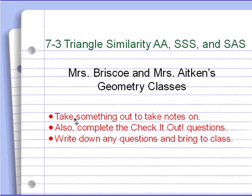We're covering 7-3 today, which is triangle similarity: AA, which is angle-angle; SSS, which is side-side-side; and SAS, side-angle-side. Remember to take notes and do the check-it-outs.